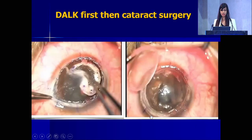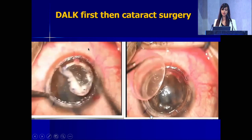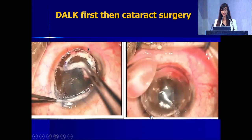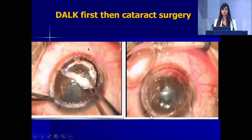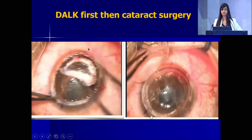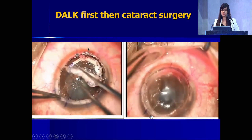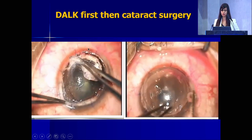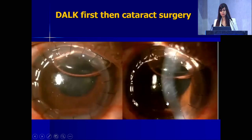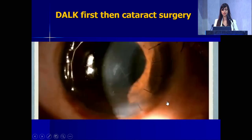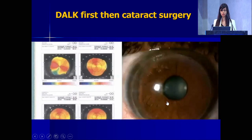If you have done a DALK first, the principles are similar. You will do a DALK, get the sutures out, and then around three months after removing all sutures, you are going to do the cataract surgery.